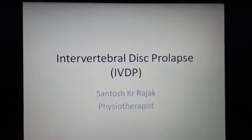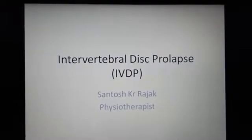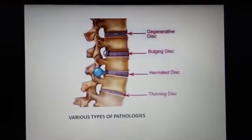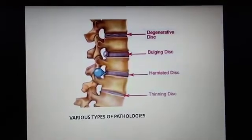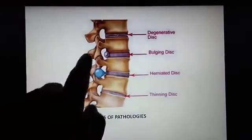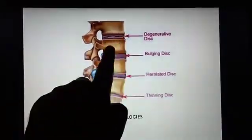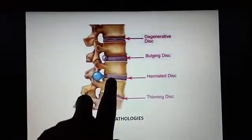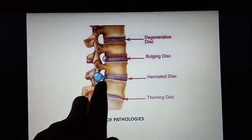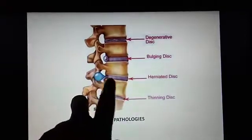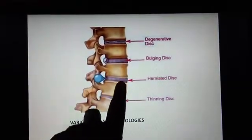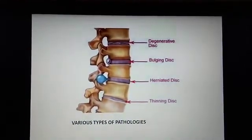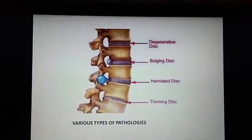Welcome to the new topic: intervertebral disc prolapse (IVDP), one of the commonest causes of back pain. Here you can see different types of spinal pathology. Starting from the top, the disc is getting degenerative; below that is a bulging disc. There is very little difference between a bulging disc and a herniated disc — in the herniated disc, part of the disc is coming out. The last type shows a reduction in disc size.